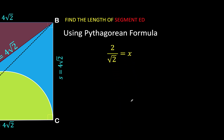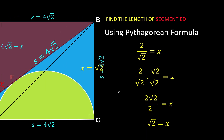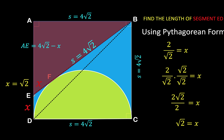Rationalizing the denominator: multiply numerator and denominator by √2 to get 2√2 / 2, which simplifies to √2. So our final answer is X = √2. This means the length of segment ED is √2 and the problem is now solved.